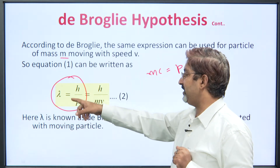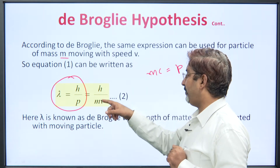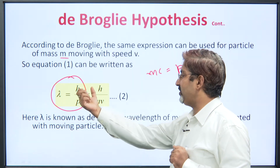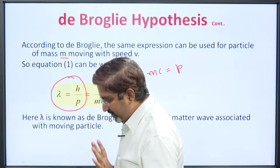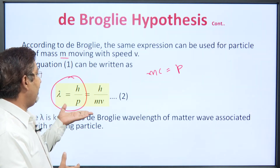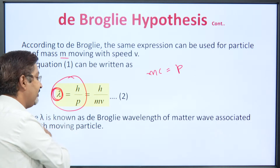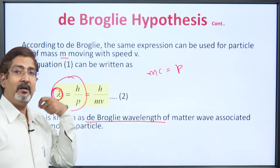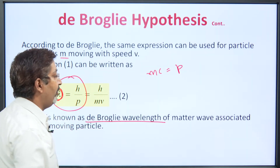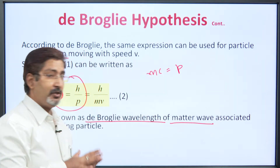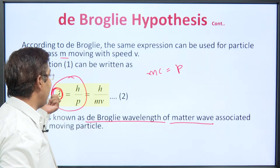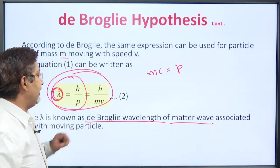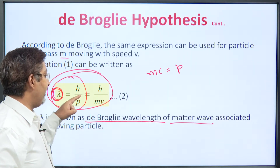For a particle of mass m (classical mass, not rest mass m₀) moving with speed v — which is much less than c — we substitute p = mv. So the de Broglie wavelength formula becomes λ = h/p = h/mv. This is no longer called simply 'wavelength'; it is the de Broglie wavelength, belonging to the matter wave associated with the moving particle.